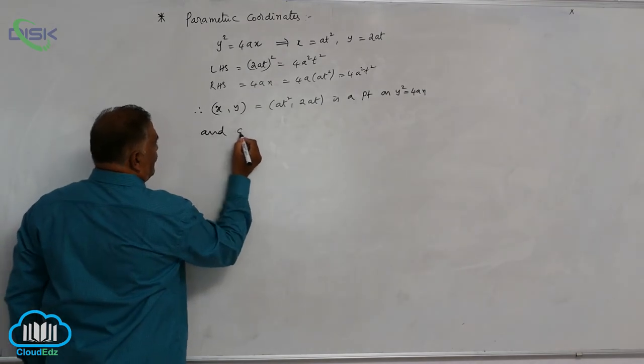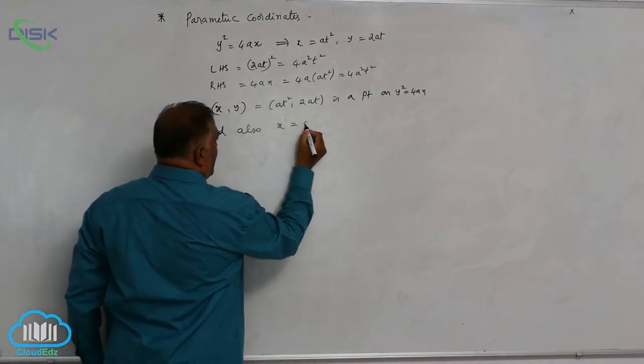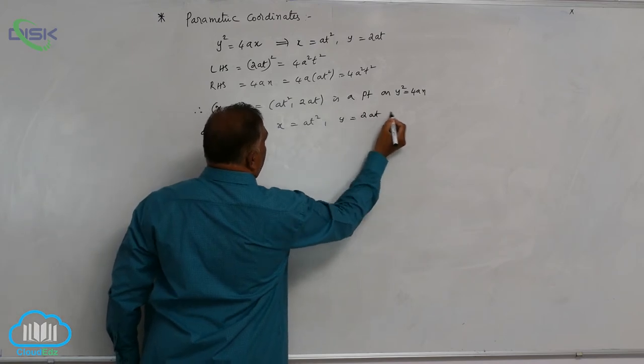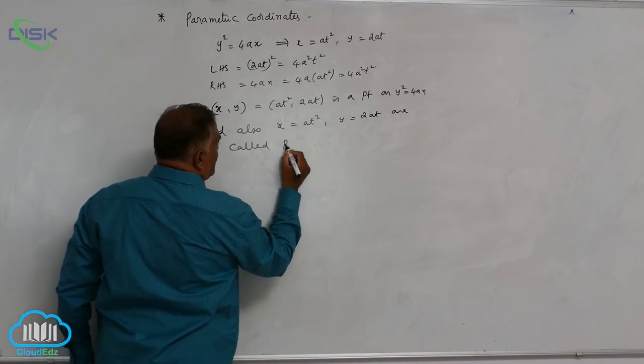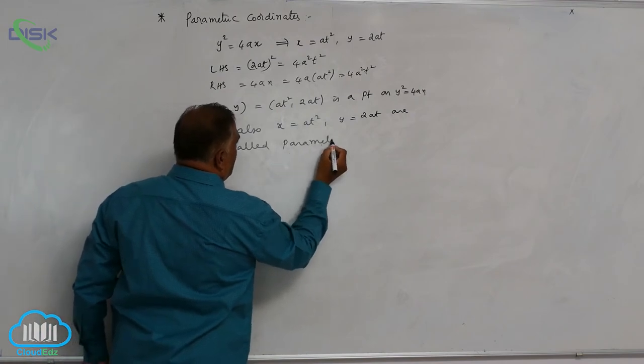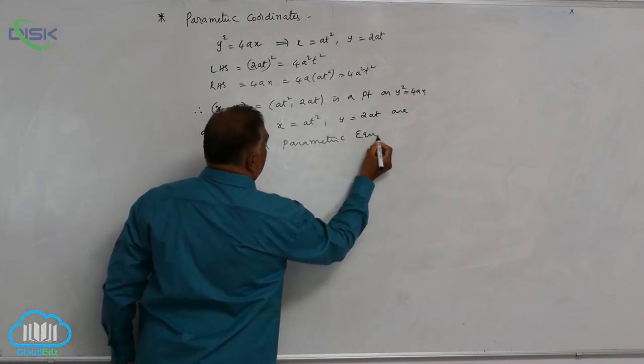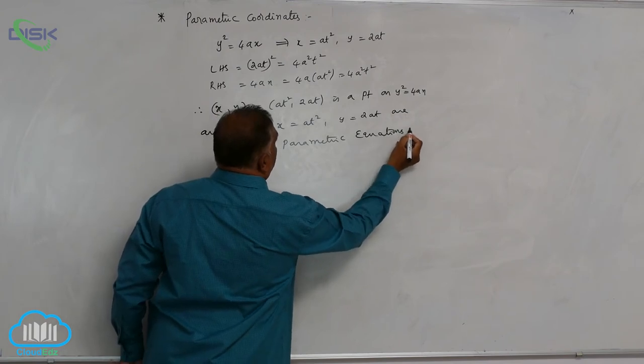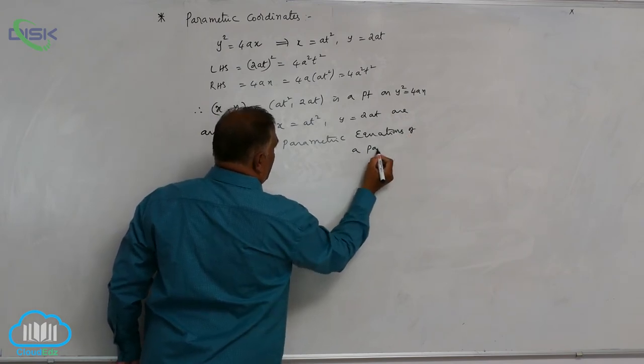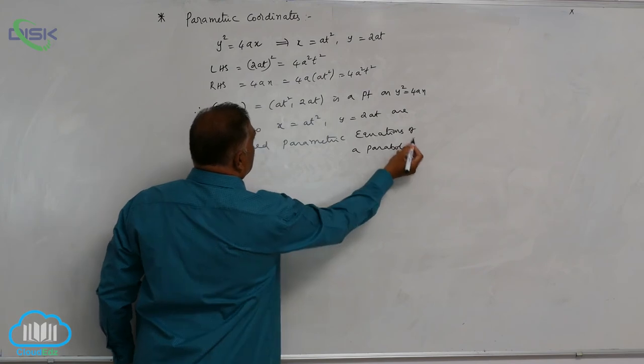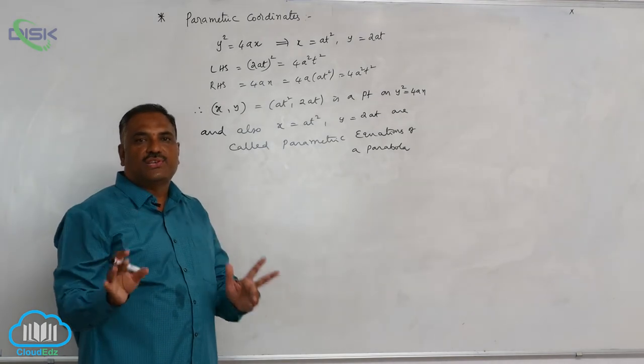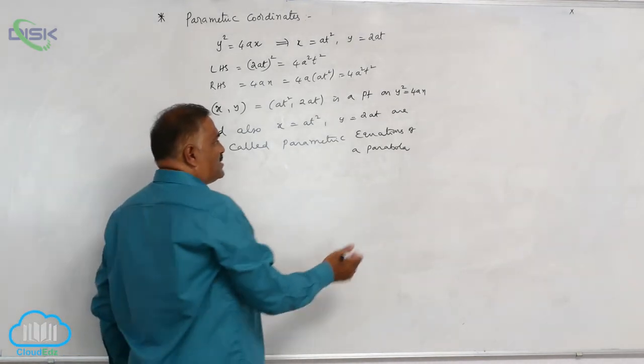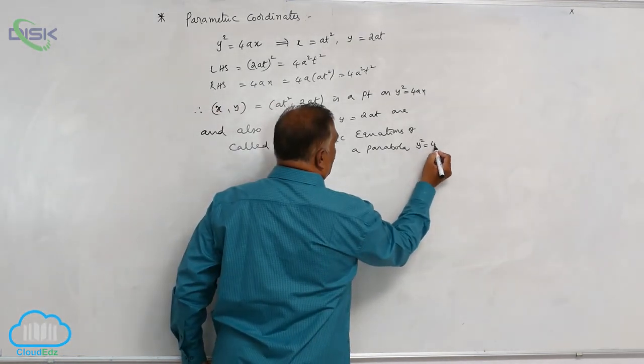And also, x is equal to at square, y is equal to 2at are called parametric equations of a parabola. Whenever you are talking about parabola means, always it is understood that it is standard equation of parabola only, that is y square equal to 4ax.